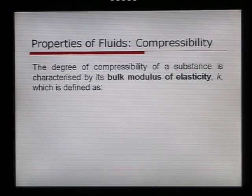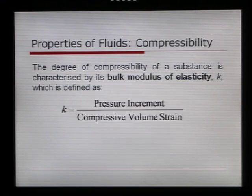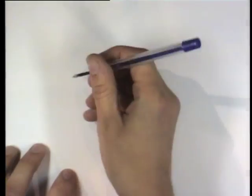Our second property of a fluid is compressibility. Now, the degree of compressibility of a substance is characterized as the bulk modulus of elasticity, and this is given a symbol K, and is defined as the pressure increment divided by the compressive volume strain. Now, before we go any further, let's take a look at compressive volume strain, or strain to start with.